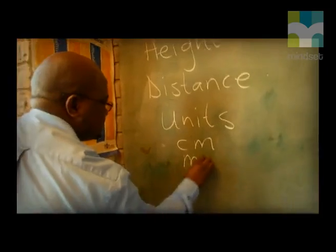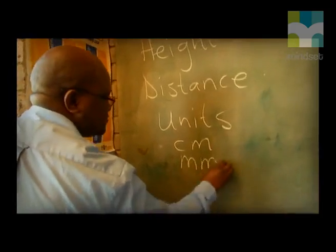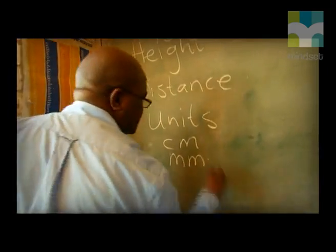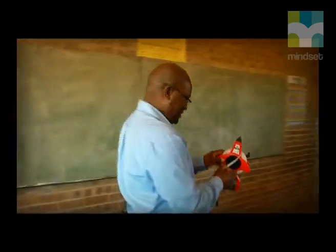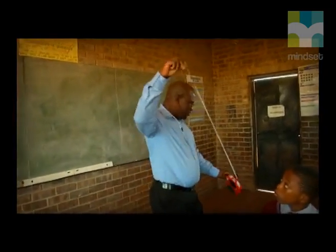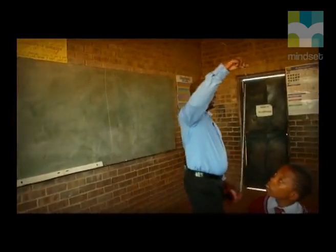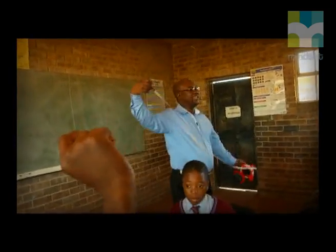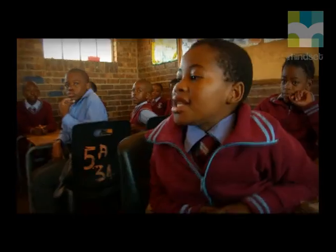Which units can we find on the ruler? Centimetre and millimetre. I also asked the learners about the units on those instruments. Like on the ruler, obviously we have centimetres and millimetres. And then on the metre wheel, they know it's a metre. And on the measuring tape, centimetres and metres.